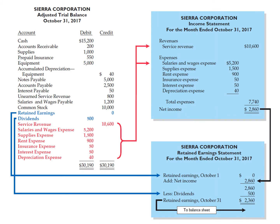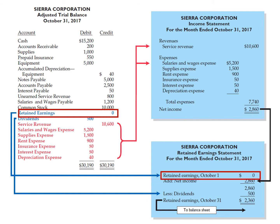This adjusted trial balance reports a zero balance in retained earnings. Prior to the closing entries, the balance in retained earnings is its beginning-of-the-period balance. For Sierra Corporation, this is zero because it is the company's first month of operations. The retained earnings statement reports an ending balance of $2,360 at the end of October. Closing entries transfer net income or net loss and dividends to the retained earnings account so that the balance agrees with the retained earnings statement.